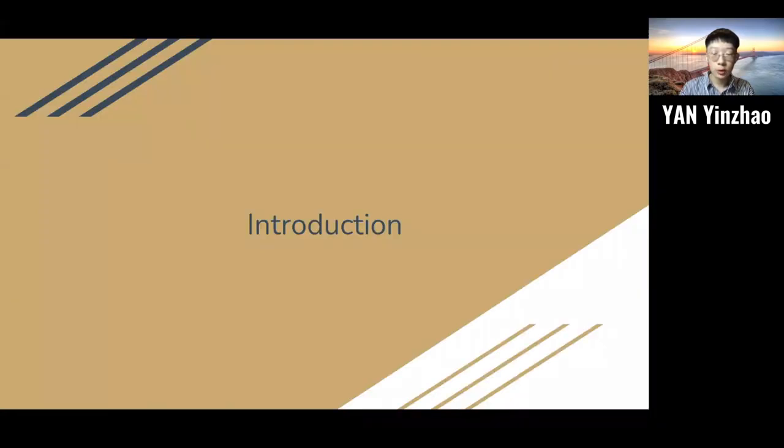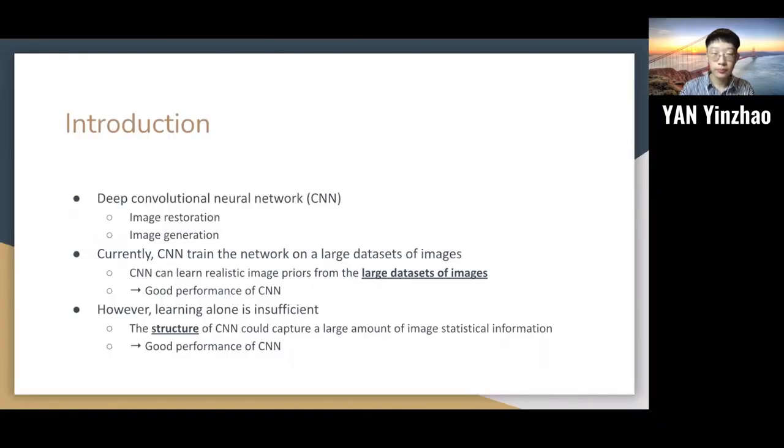First, let's take a look at the introduction. Deep Convolutional Neural Network, also called CNN, has been widely used in image restoration and image generation. Currently, CNN trains the network on a large dataset of images. So one may assume that CNN can learn realistic image priors from the large datasets of images, and it is the reason why CNN could achieve good performance.